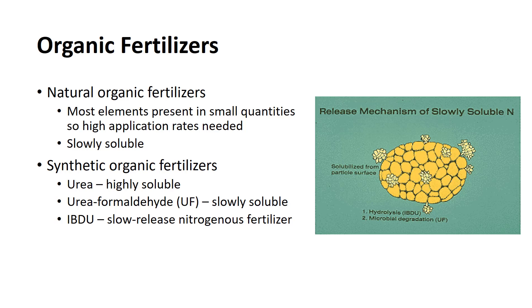Urea, for example, is produced under high pressure from carbon dioxide and ammonia. Urea formaldehyde is a reaction product of urea and formaldehyde. Urea is highly soluble and must be used with caution, whereas UF is slowly soluble. IBDU is a reaction between isobutylidine and urea producing a slow-release nitrogenous fertilizer. The slowly soluble fertilizer is released through various mechanisms such as hydrolysis and microbial degradation.